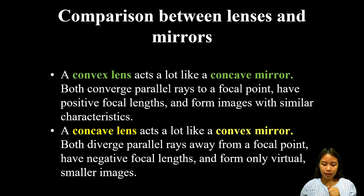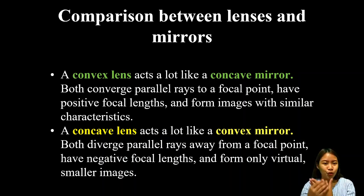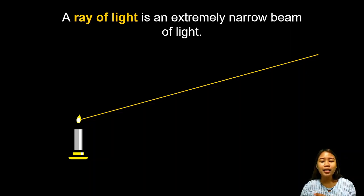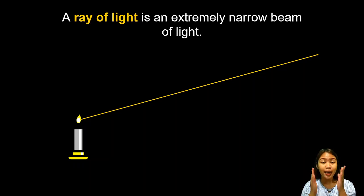Now let us get to know how light rays spread whenever a source of light is lit up. We have the ray of light, which is an extremely narrow beam of light — so narrow that it cannot be seen by the naked eye.